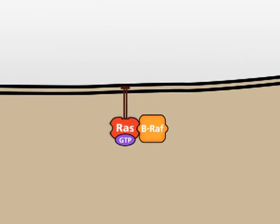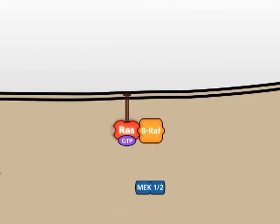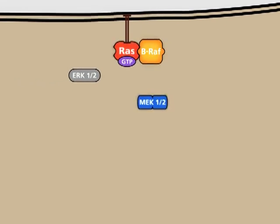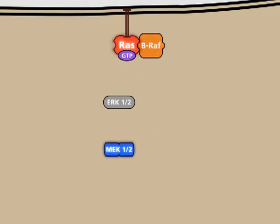Active BRAF phosphorylates and activates the kinases MEK1 and 2, which in turn phosphorylate and activate the kinases ERK1 and 2.